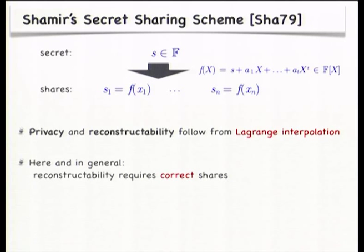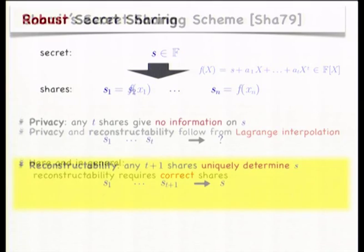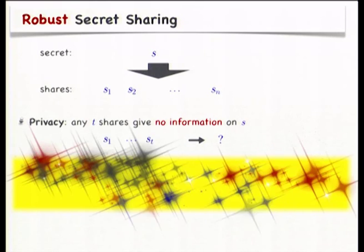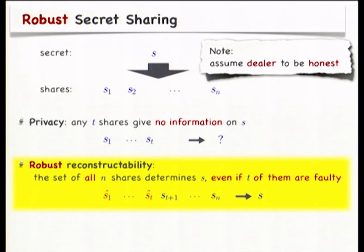In general in secret sharing, the reconstructability requires that the shares are correct. However, in a malicious environment where players may be dishonest, this may not be the case. This motivates the notion of robust secret sharing where the ordinary reconstructability property is replaced by a robust reconstructability property, which requires that the set of all n shares uniquely determines the secret even if t of the shares are incorrect. In robust reconstruction, we take all the shares into the reconstruction, but t of them might be incorrect. Note that I assume the dealer to be honest; if you want to take care of a possibly dishonest dealer, this leads to the notion of verifiable secret sharing.